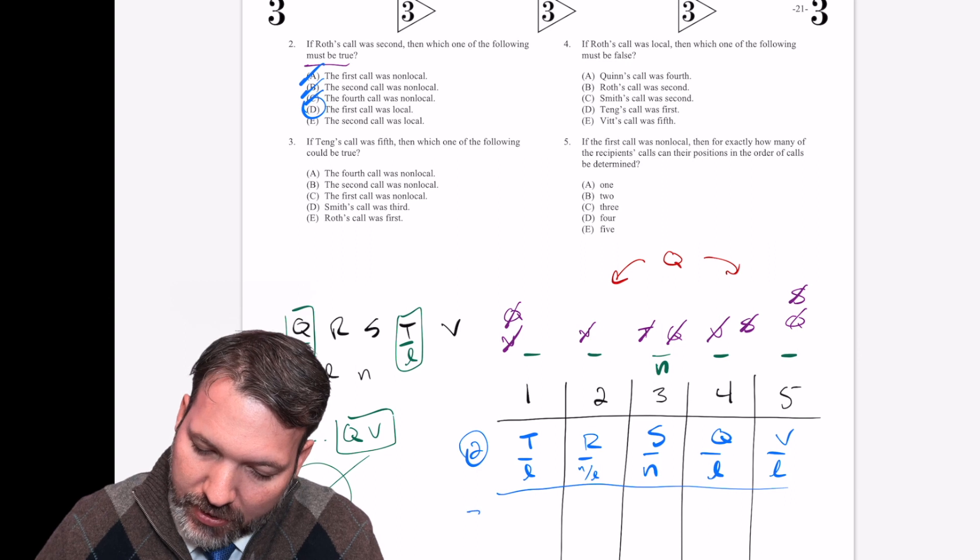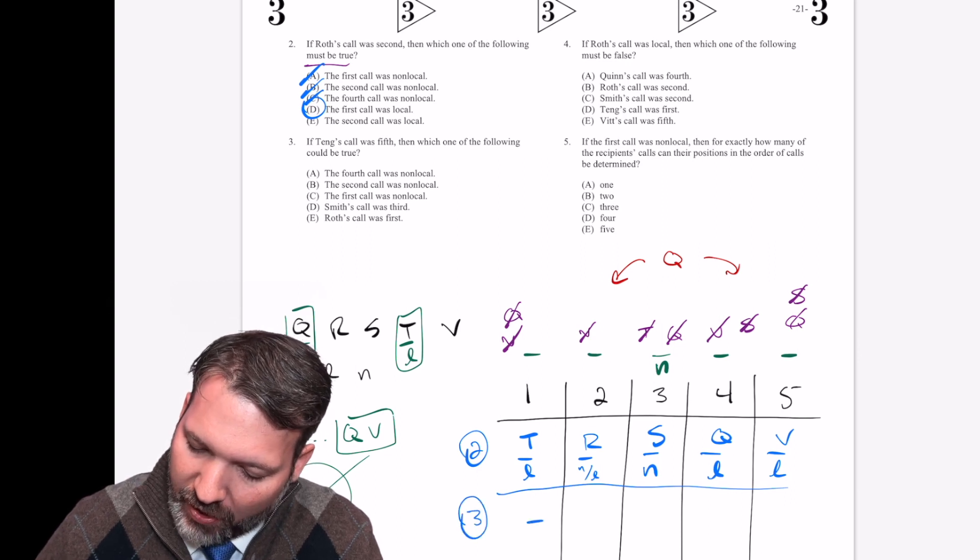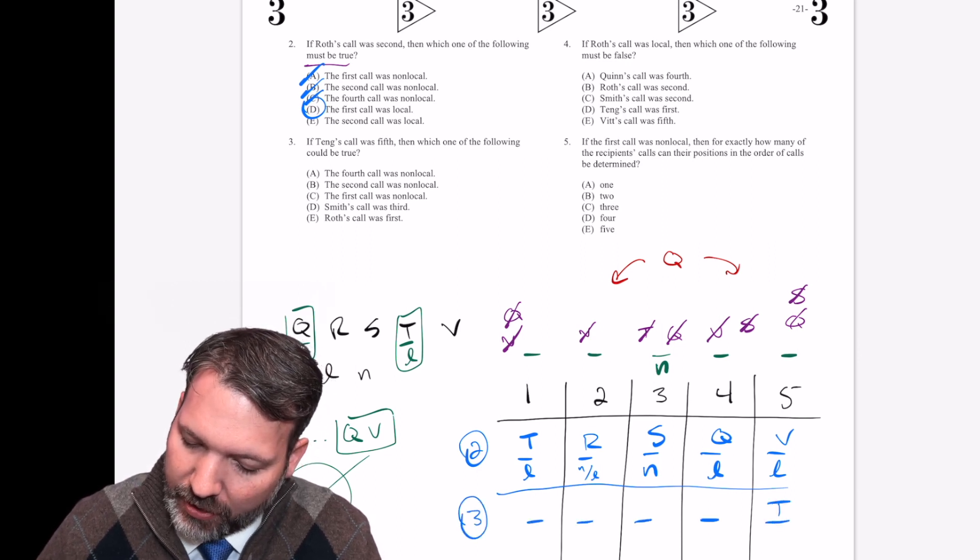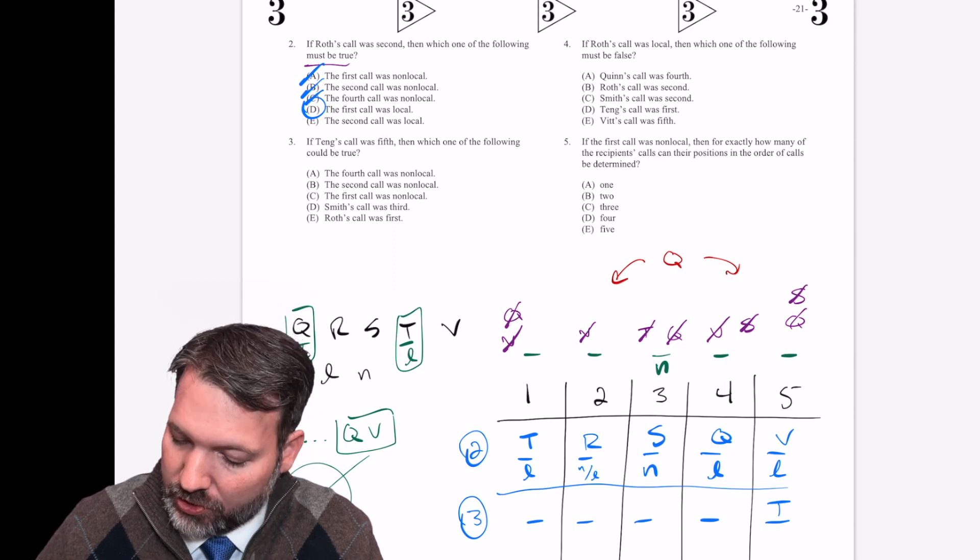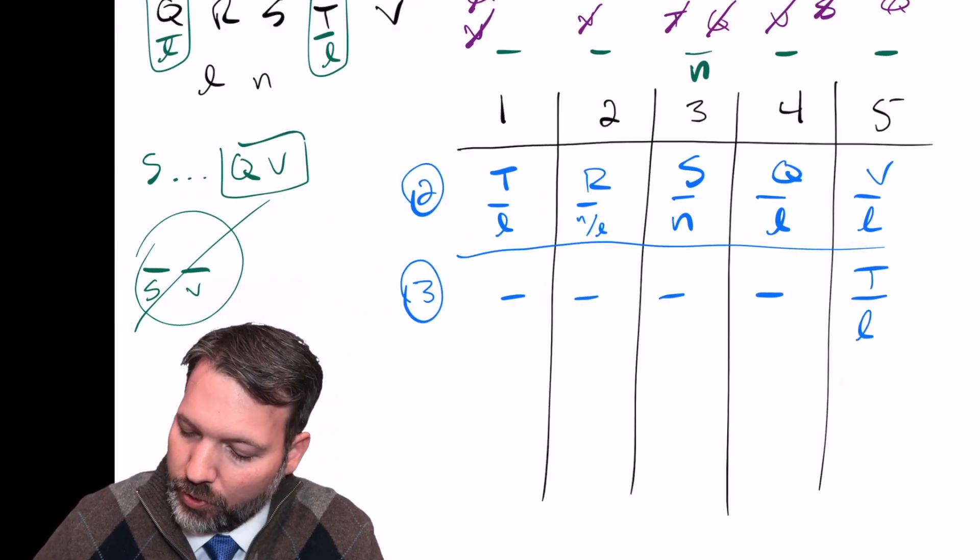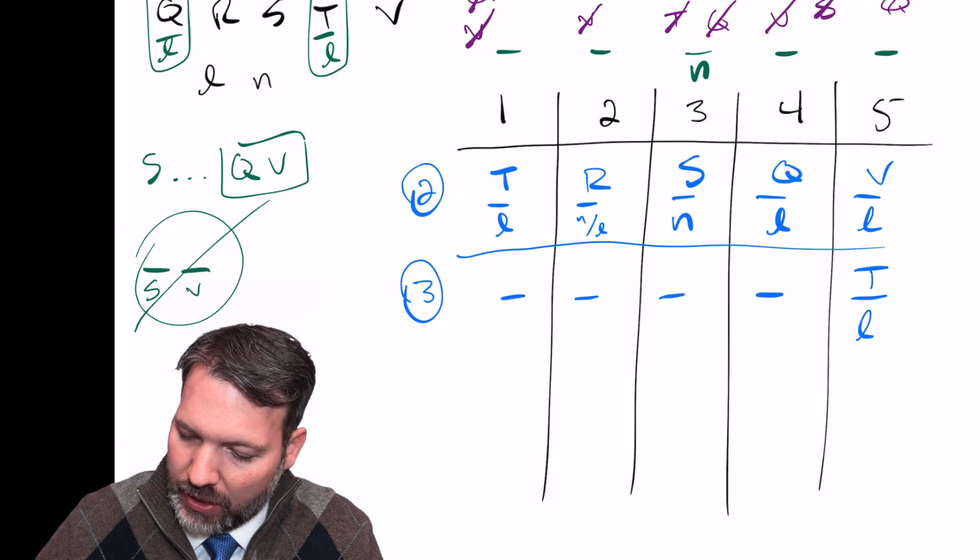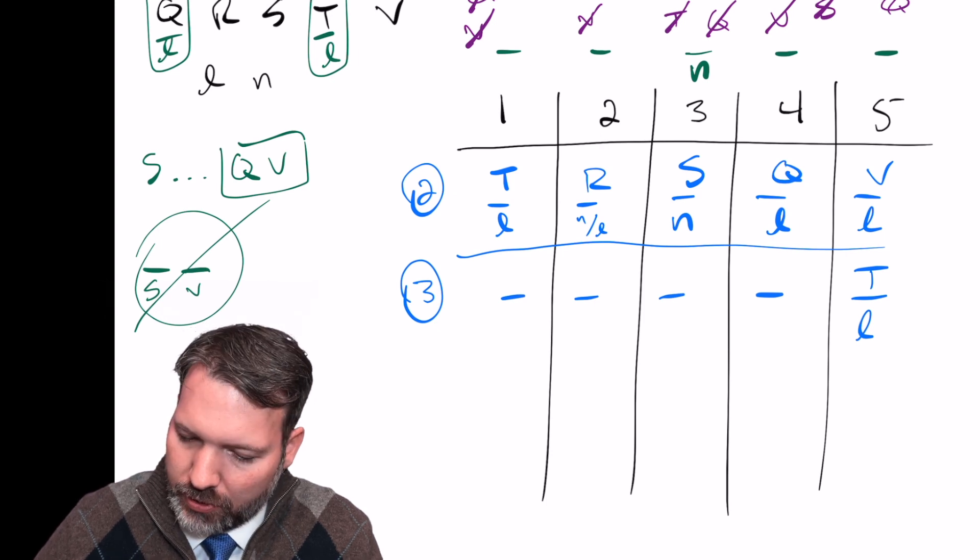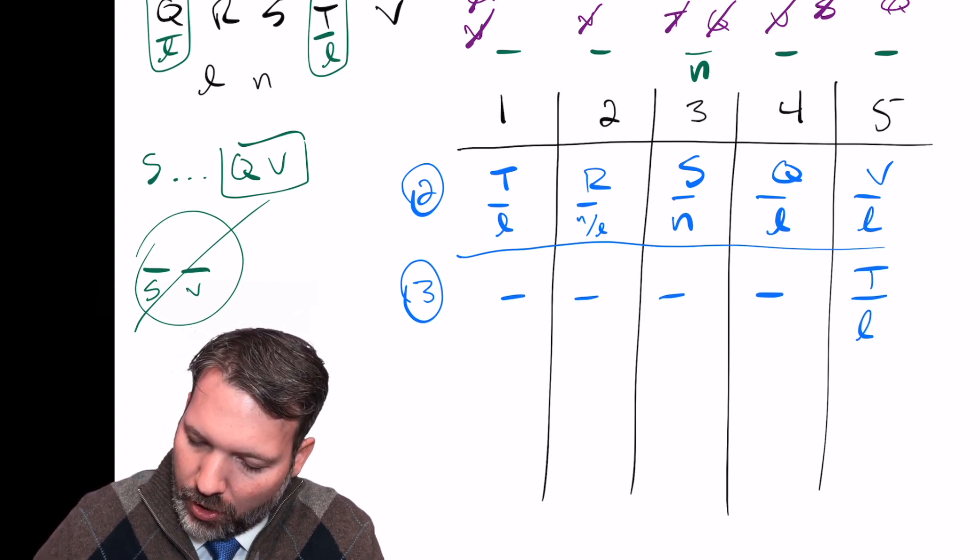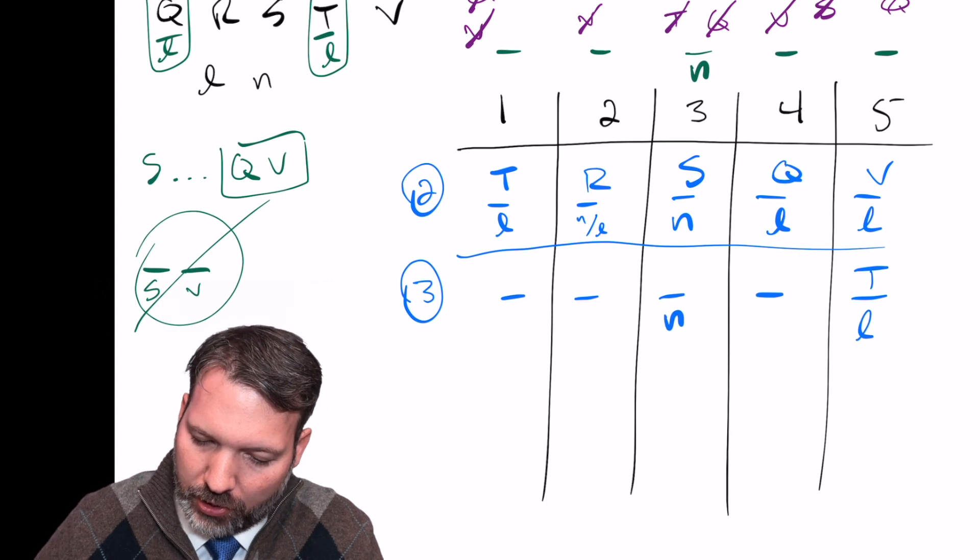All right. Number three is next. If Tang's call was fifth. So let's put in our two-dimensionality. Tang's call is fifth. Which of the following could be true? Well, if Tang is fifth, we know, of course, that Tang is local. So T over L. We always know the third call is non-local. And I'm thinking about that S dot dot Q V. Q right now can't go fourth.